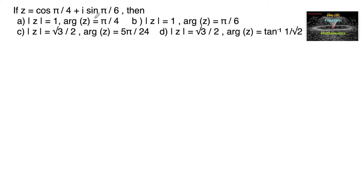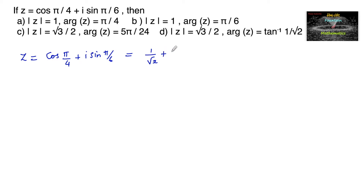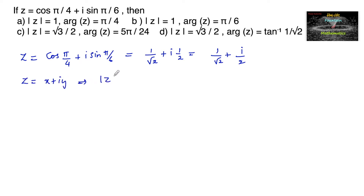If z is equal to cos(π/4) + i·sin(π/6), then we have to find mod z and argument of z. Given z = cos(π/4) + i·sin(π/6), which is equal to cos(π/4) = 1/√2 and sin(π/6) = sin 30° = 1/2. So z = 1/√2 + i·(1/2).